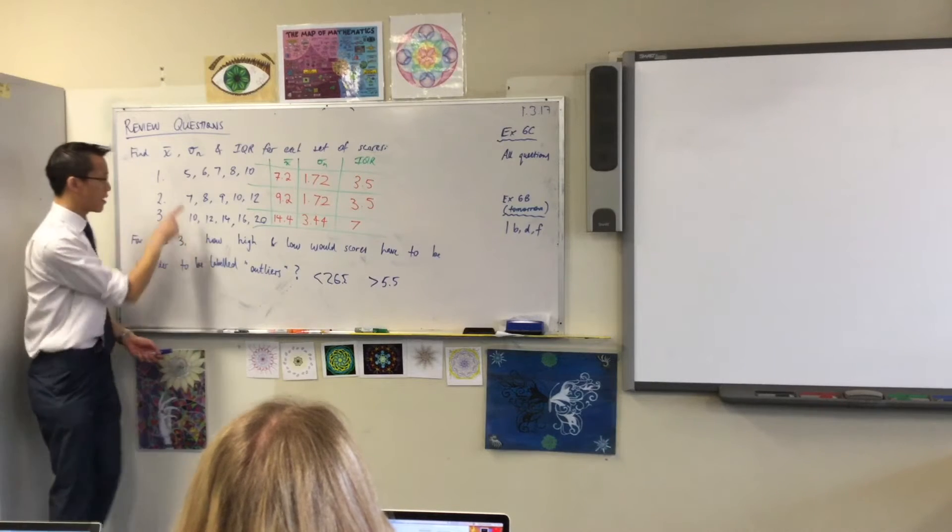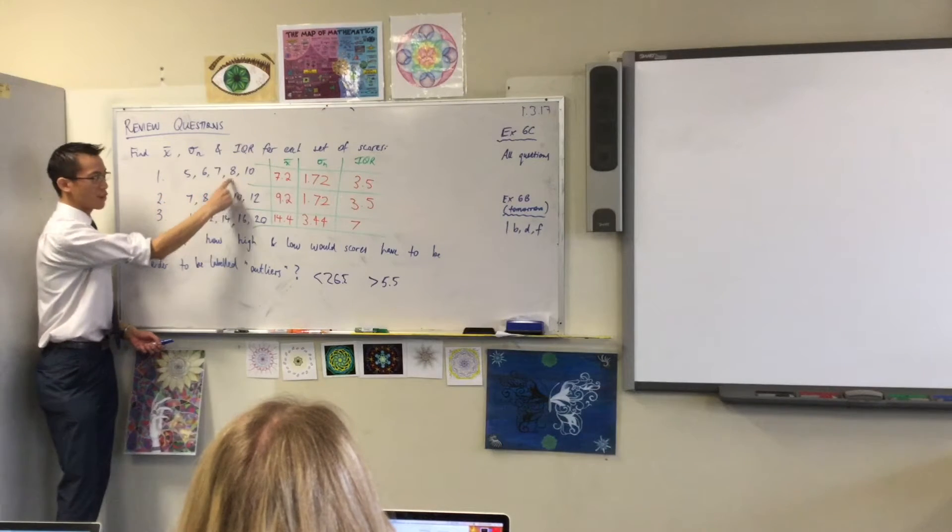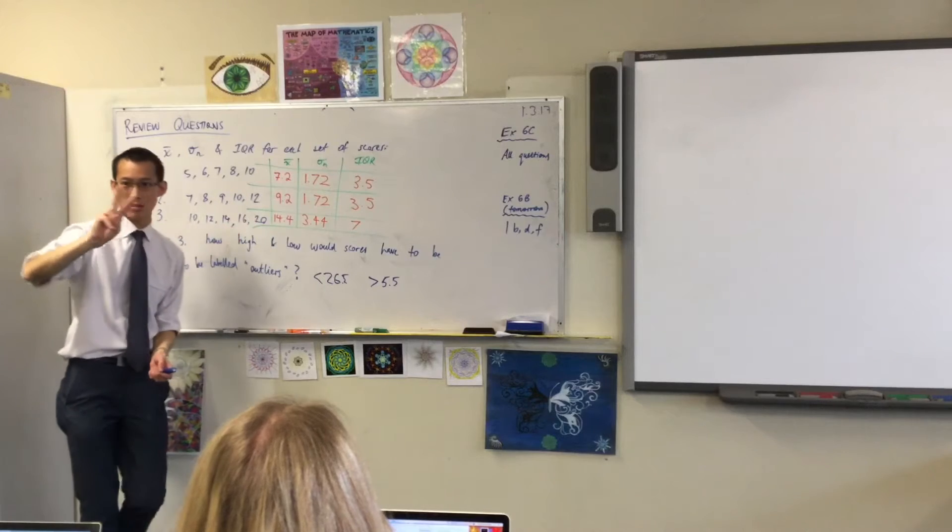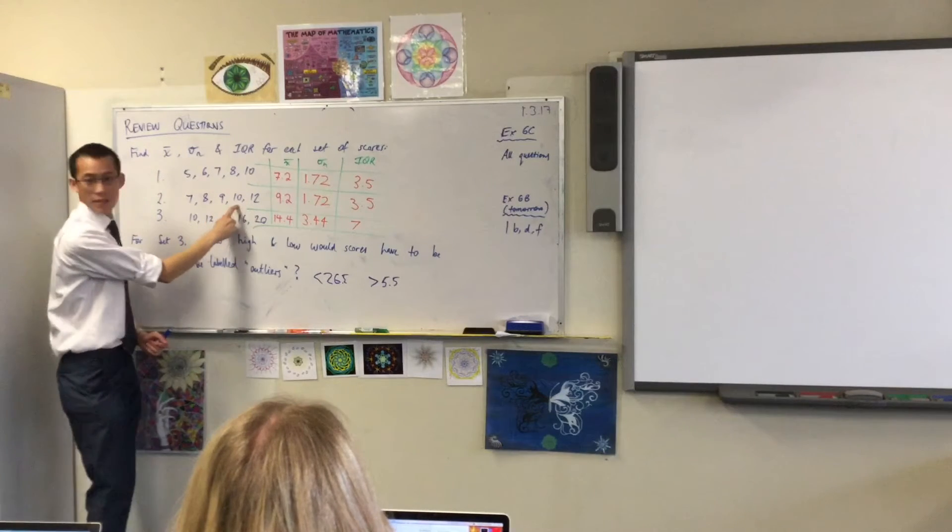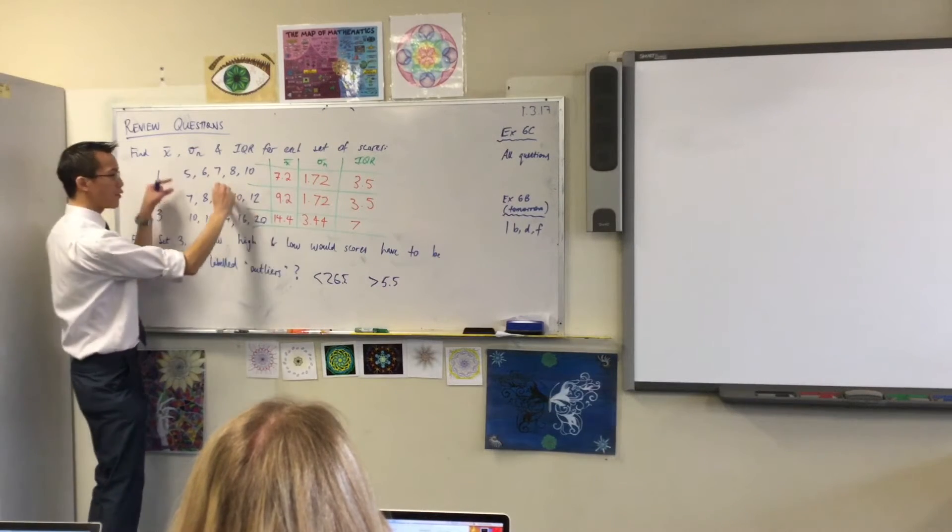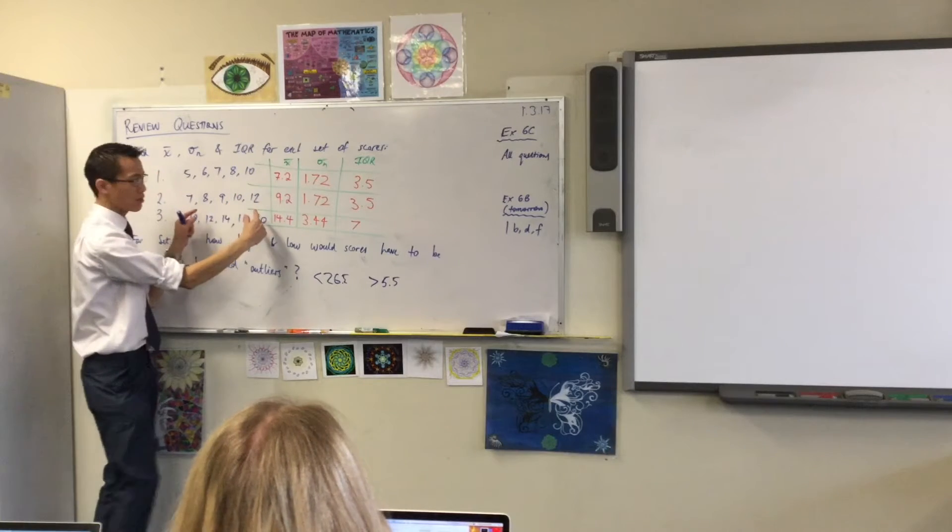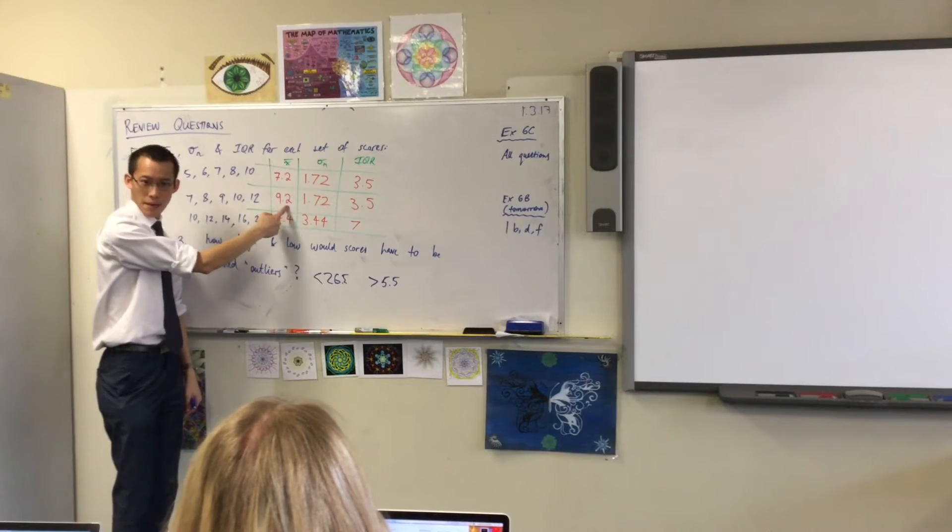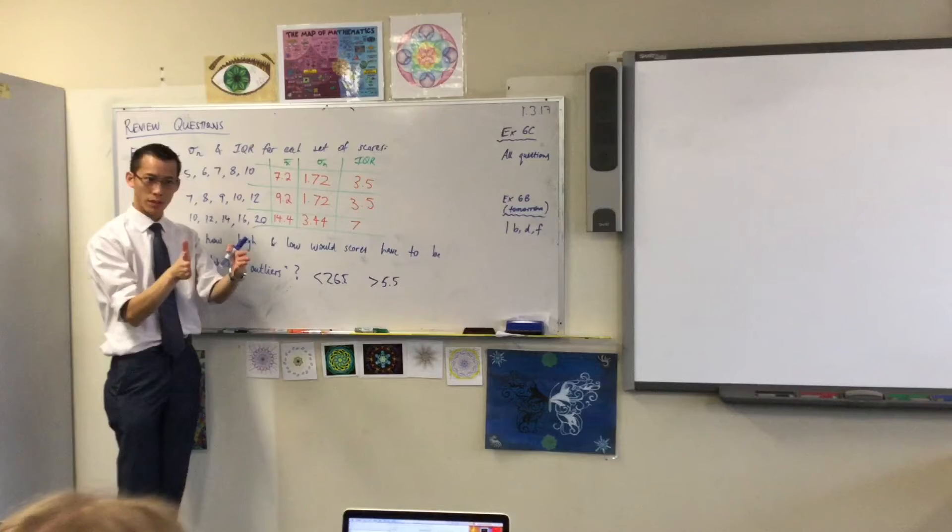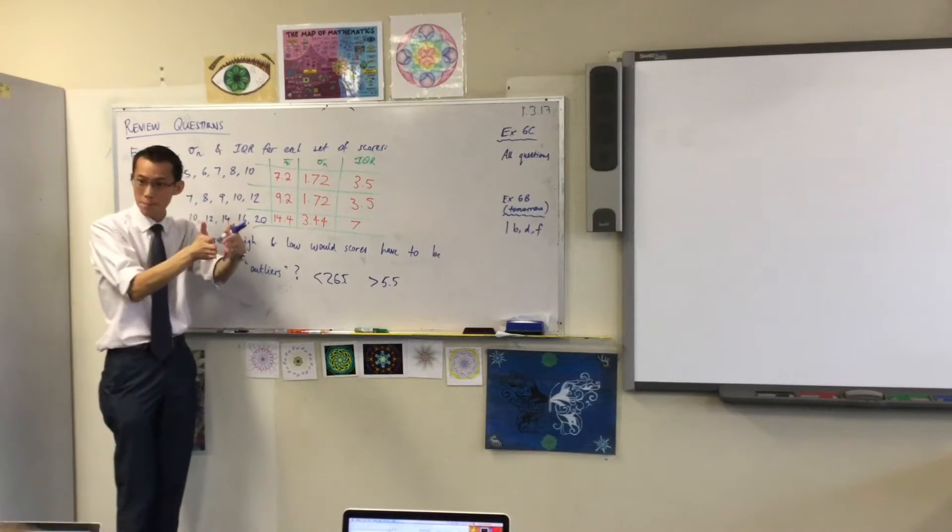Every score—yeah, every single score if you line them all down like this is plus two to get onto this one, does that make sense? So therefore, if you take all the scores and add two, that's the same as taking the mean and adding two to it. Because every single one moves up.